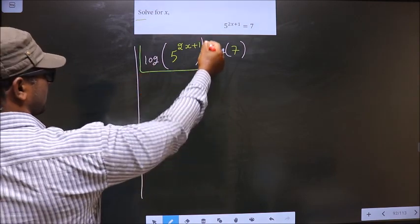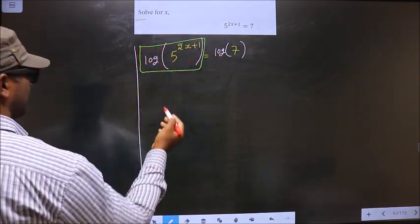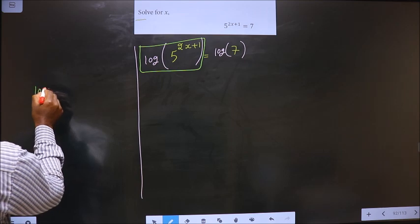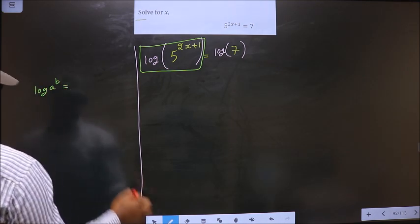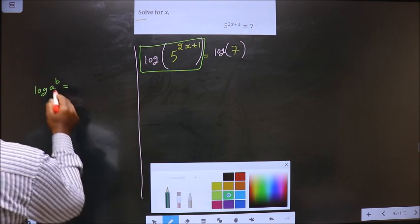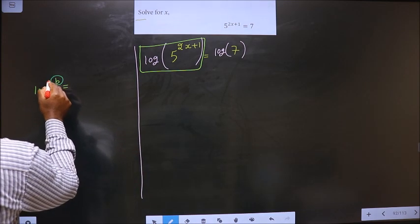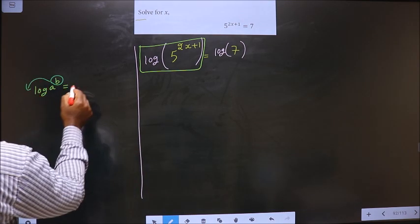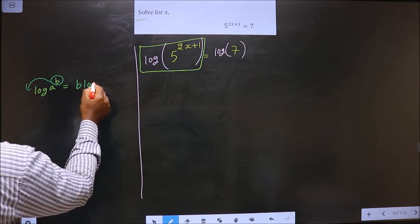On this, I will apply the formula: log a^b. Whenever you have the power, power will come before the log making it b log a.